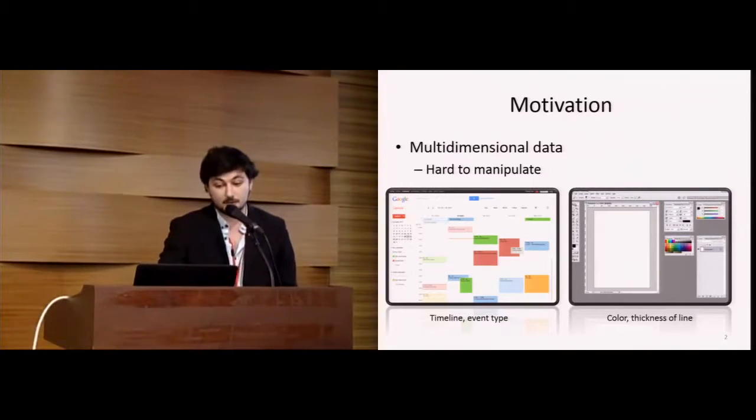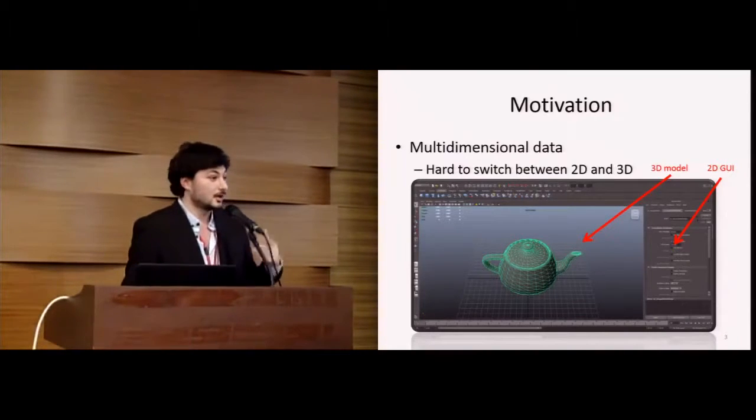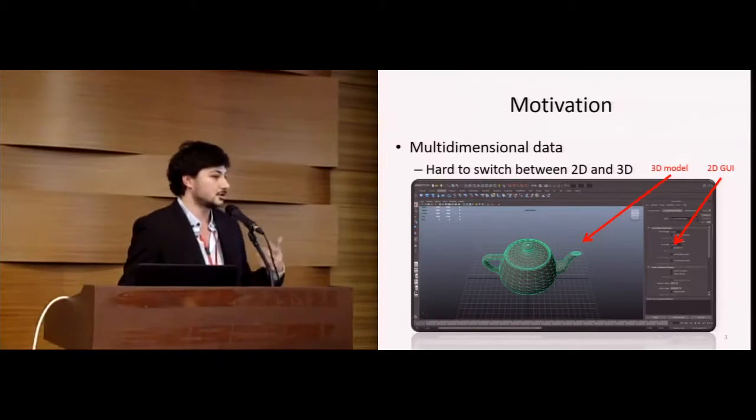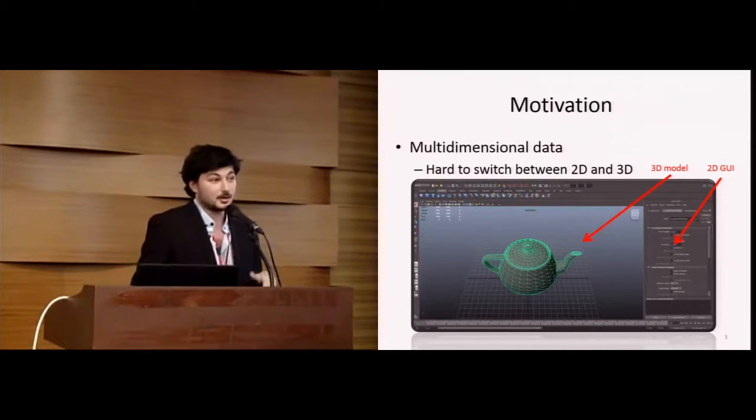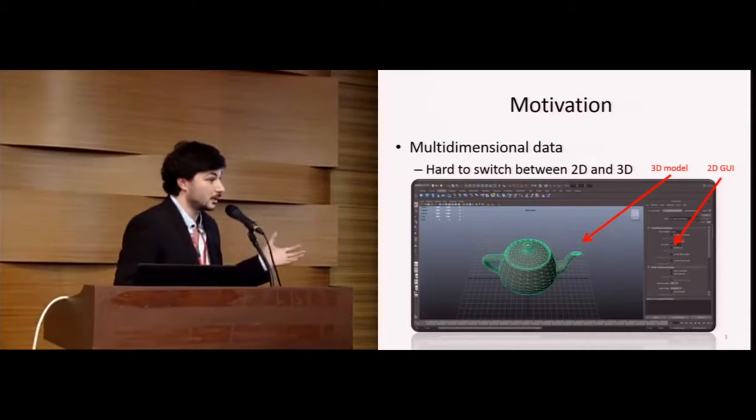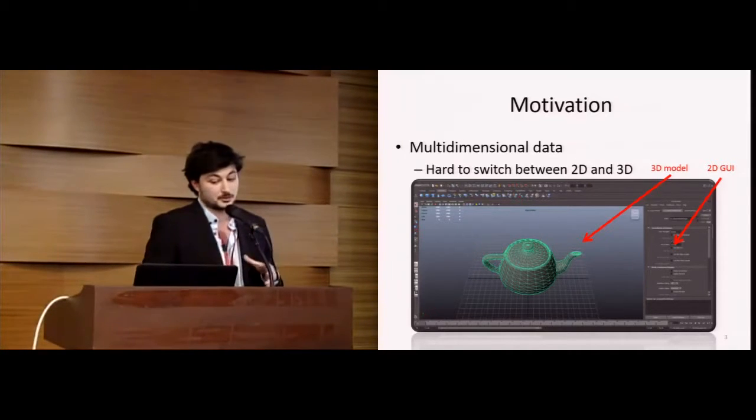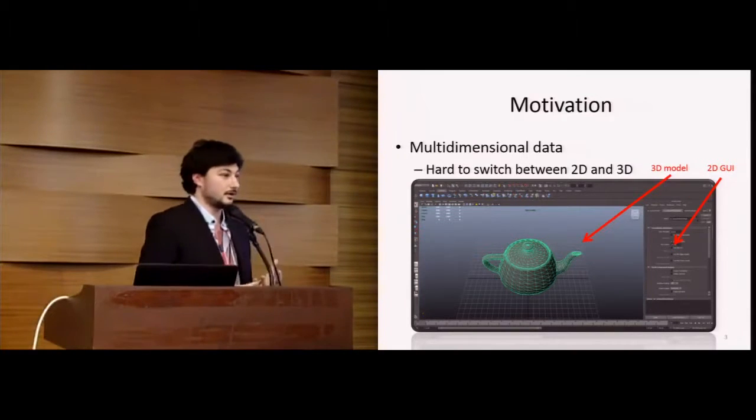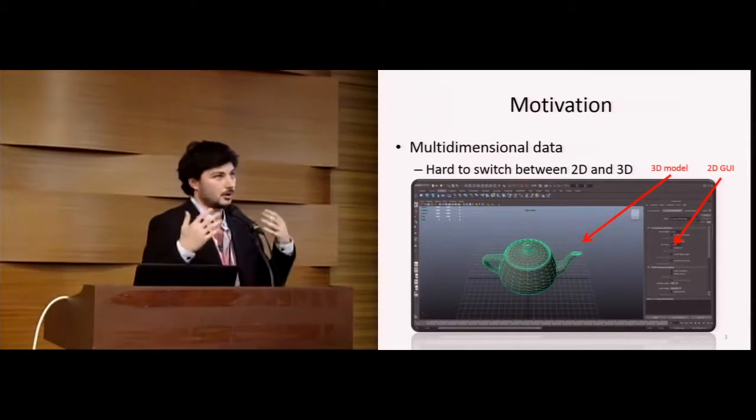In the particular example of 3D manipulations, there are six degrees of freedom for the 3D model, three translations and three rotations, and there are two dimensions for the 2D GUI. The regular mouse is very useful for manipulating this 2D GUI. However, it's pretty limited to manipulate 3D objects because of the lack of additional dimensions.